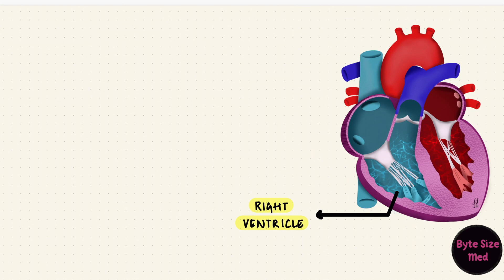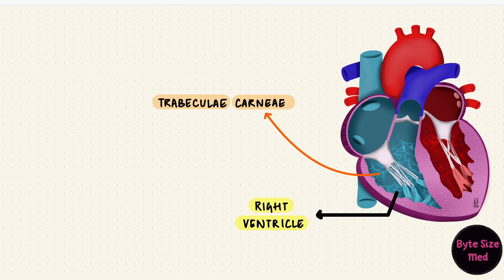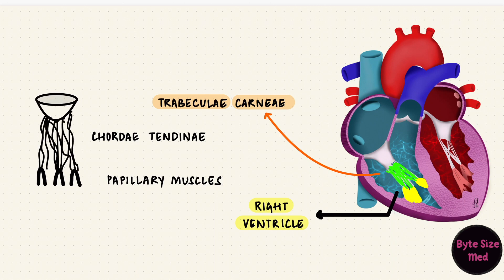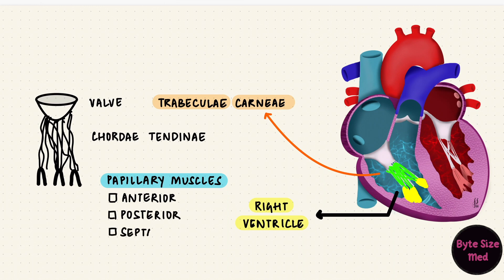The right ventricle has muscular ridges and bridges called trabeculae carneae. They form the rough inflow walls of the right ventricle. There are papillary muscles, which are like little pillars attached to the wall of the ventricle at one end, and the other end is attached to the tendinous cords called the chordae tendineae. The other end of these cords is attached to the free margins of the leaflets of the valve. The right ventricle has three papillary muscles: the anterior, which is the largest, the posterior, and the septal.